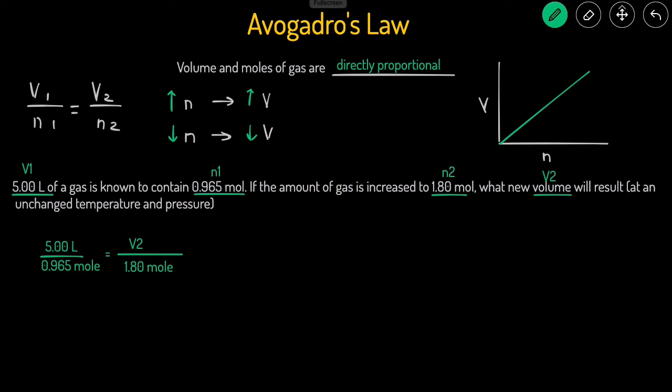Then we can just multiply the 1.8 moles over to the other side. So it will give you 5 liters times 1.8 moles divided by 0.965 moles. And then the moles will cancel out.